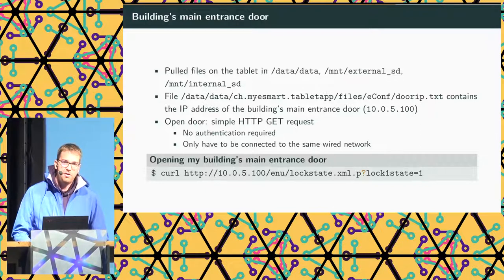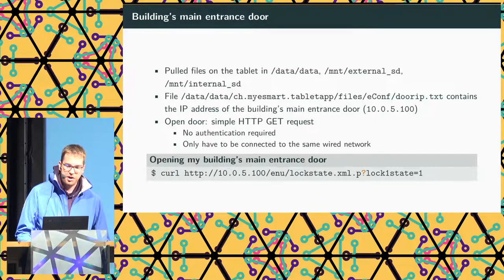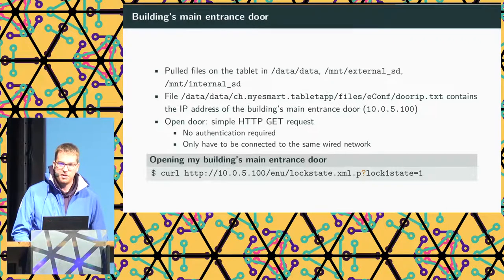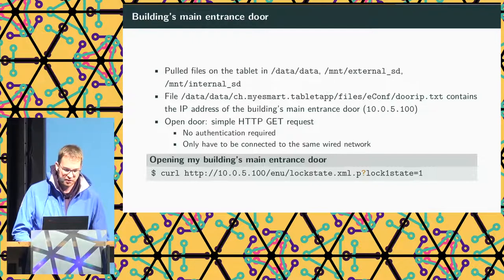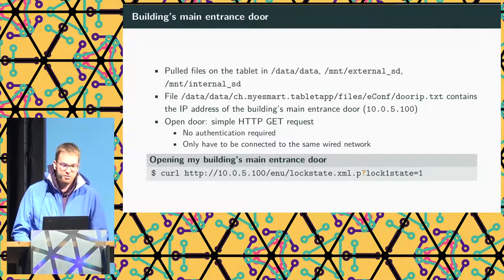I copied files from directories like /data/data and the SD card. In the tablet app folder, there was a file called doorIP.txt containing the IP address of the main building entrance door — 10.5.100 for my building. Looking at the code, what it does is simply make an HTTP GET request to a URL on the door IP, and that opens the door. There is no authentication — you just need to be connected to the internal network, and you can replay the traffic to open the door.